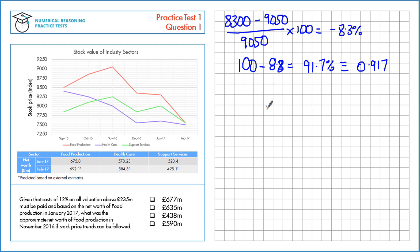We want to reverse this and estimate from January to November. Take the food production stock value of 675.8 million and divide by 0.917, which gives an estimate for the value in November of 737 million pounds. That's for November 2016, based on that value.